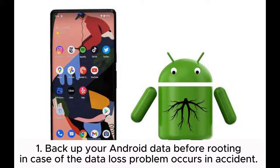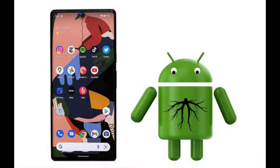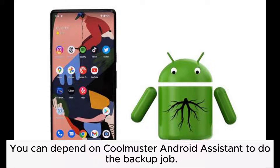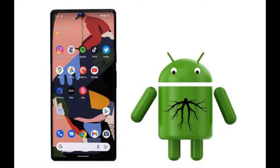1. Backup your Android data before rooting in case a data loss problem occurs accidentally. You can depend on Coolmuster Android Assistant to do the backup job.